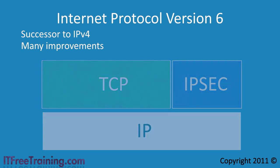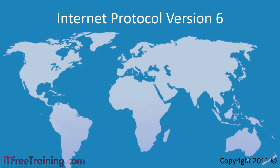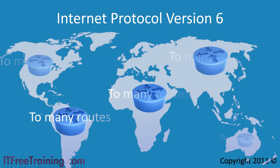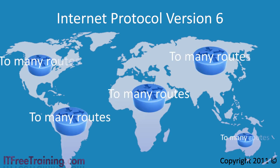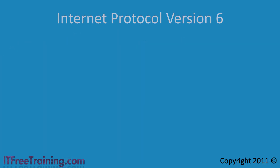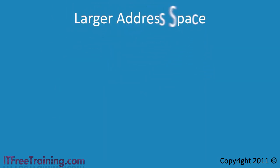The IP version 4 network grew as demand grew and thus the network is not laid out as well as it could be. With IP version 6, more thought has gone into the geographical layout of the network. The most noticeable difference between the two protocols is that IP version 6 uses a much larger address space.